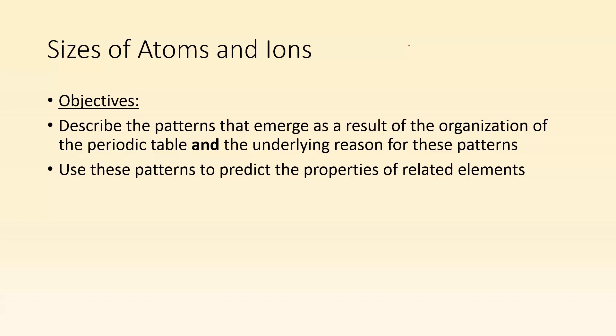How's it going, ladies and gentlemen? Mr. Donoghue here once again. This time we're going to take a look at the sizes of atoms and ions. Our objectives are to describe the patterns that emerge as a result of the organization of the periodic table and the underlying reason for those patterns, specifically the sizes of atoms. Then we want to use these patterns to predict the properties of related elements.